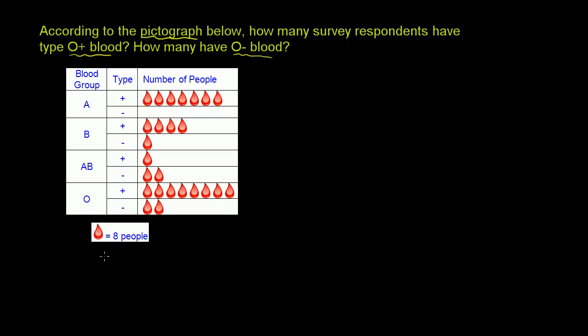And then they tell us that each blood drop in this pictograph represents eight people. So you can kind of view that as a scale of these graphs. Each of these say eight people.